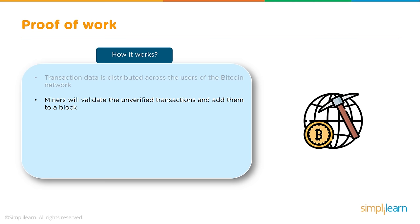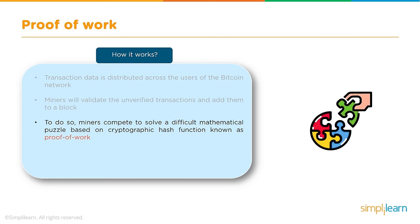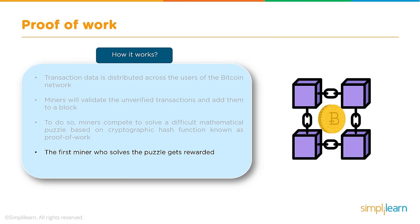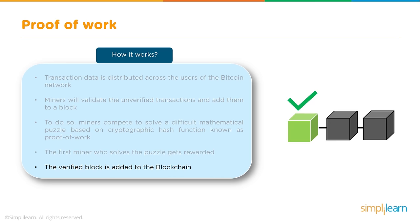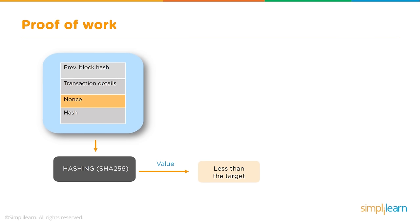Transaction data is distributed across Bitcoin network users. Miners validate unverified transactions and add them to blocks. Miners compete to solve a difficult mathematical puzzle — generating the correct nonce value using cryptographic hashing. This whole process is known as proof of work. The first miner to solve the puzzle gets rewarded — the purpose for which miners invest in hardware, computing power, and energy. Once a miner verifies the block, it is added to the blockchain.